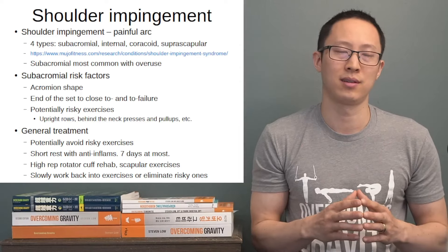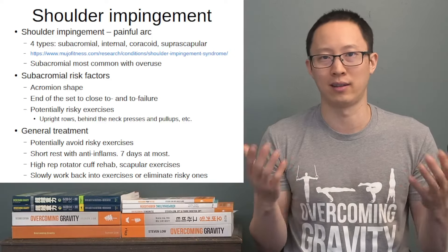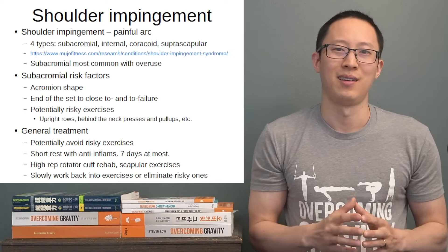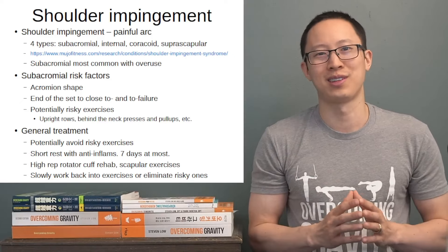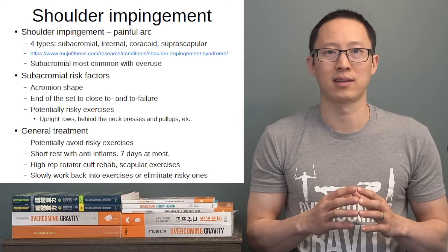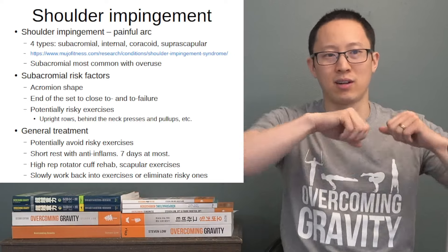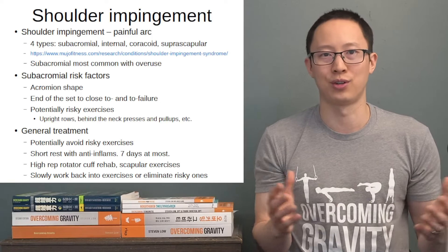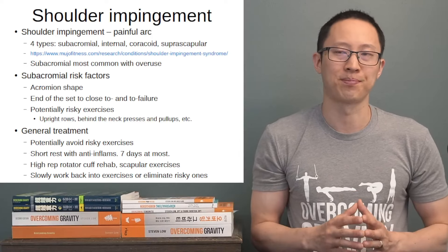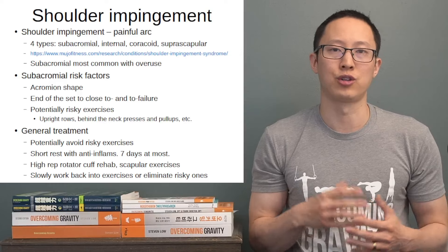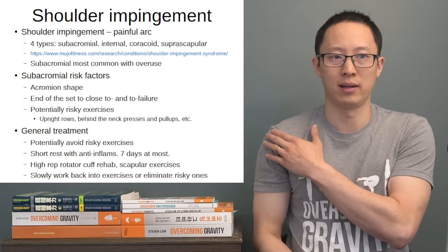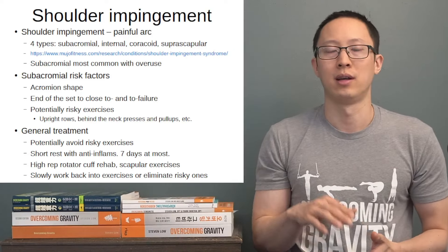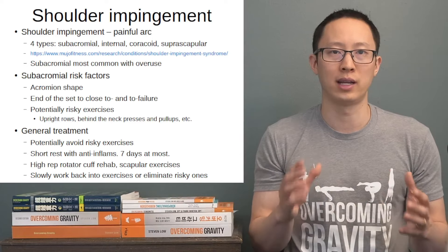The general treatment for shoulder impingement includes avoiding potentially risky exercises. If things like upright rows or behind-the-neck pull-ups cause pain, obviously avoiding them is helpful. People who have connective tissue issues like Ehlers-Danlos Syndrome — usually genetic in cause — generally are more at risk for shoulder impingement with exercises where the shoulder is in a more unstable position.